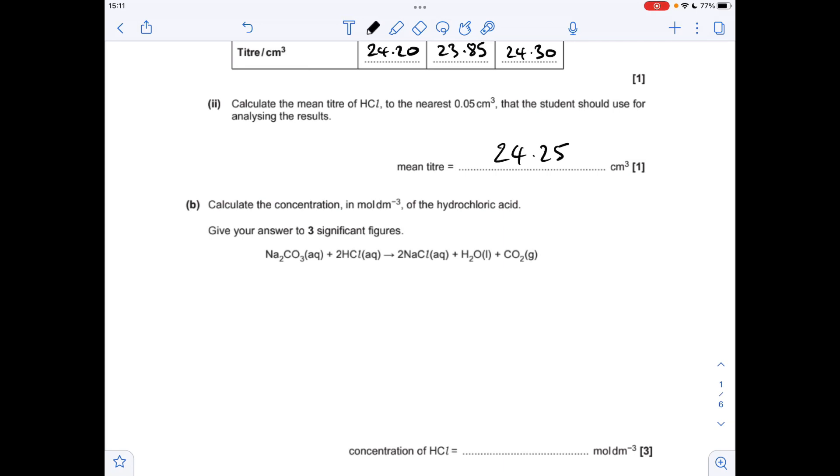Moving on to the calculation of the concentration, the first thing I'll do is work out the moles of sodium carbonate that have been used. That's just concentration times volume. Just remember that your volume needs to be in decimeters cubed. The moles of HCl is going to be twice as many because of the ratio in the equation, so that's 7.5 times 10 to the minus 3.